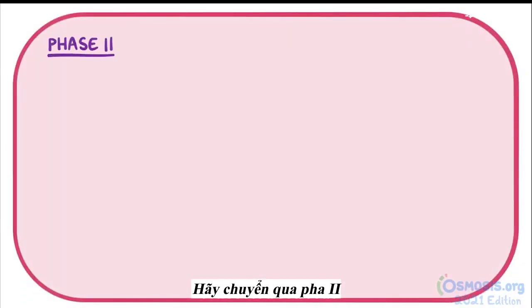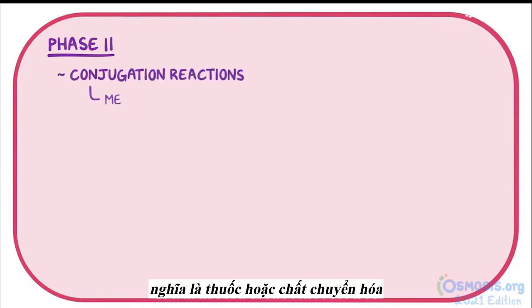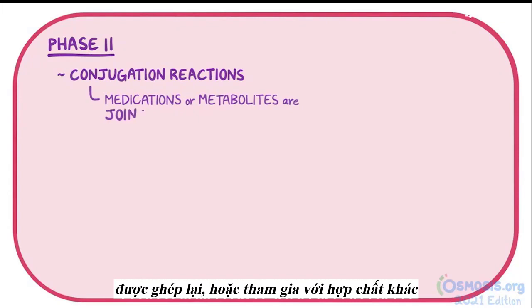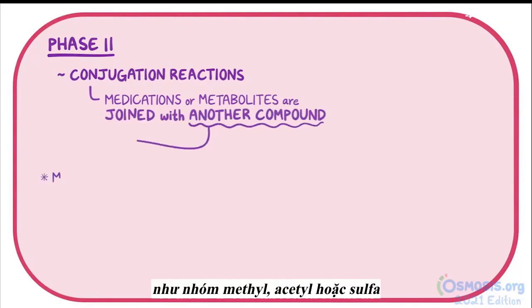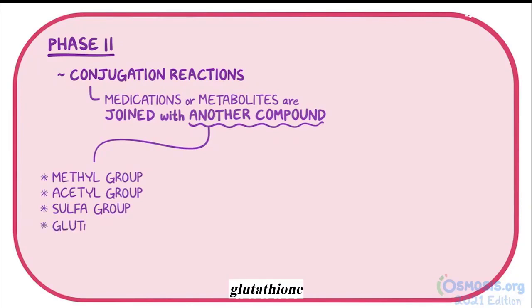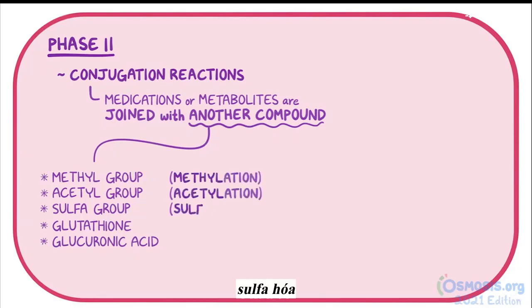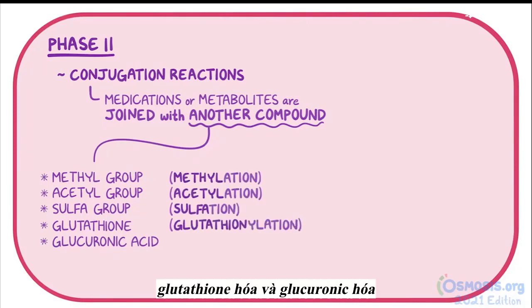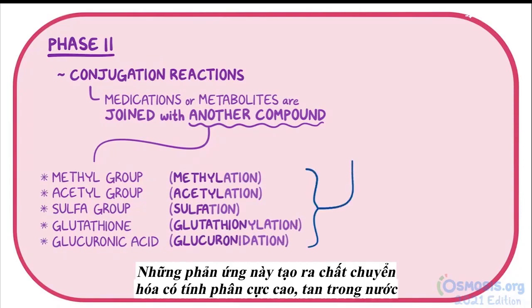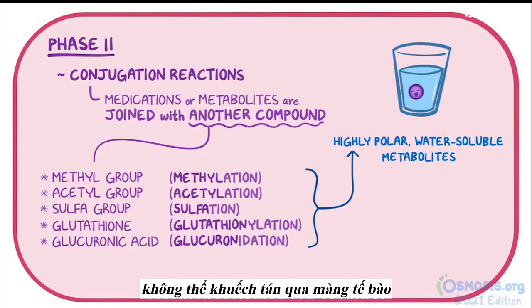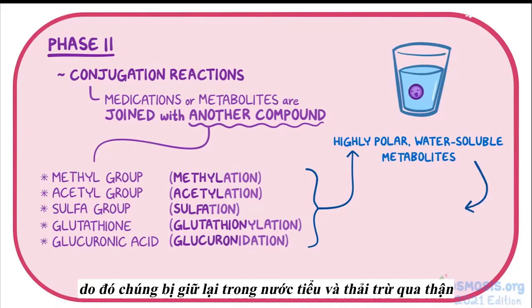Let's move on to phase 2 reactions. These are conjugation reactions, meaning that the medications or metabolites are conjugated, or joined with another compound, like a methyl, acetyl, or sulfa group, glutathione, or glucuronic acid. So these reactions include methylation, acetylation, sulfation, glutathioneylation, and glucuronidation. These reactions create highly polar, water-soluble metabolites that can't diffuse through a cell membrane very easily, so they're trapped in the urine and eliminated by the kidneys.